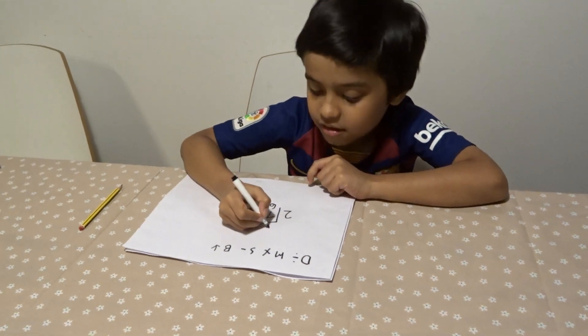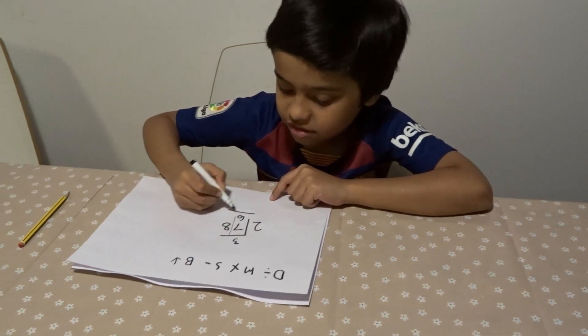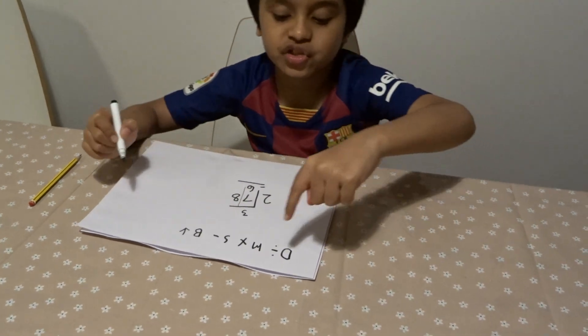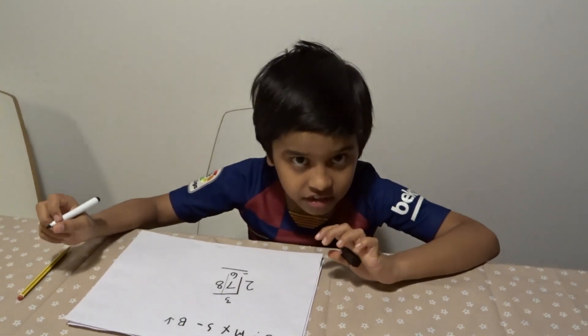And here we put a three. Now we minus it. It's time for subtraction. Seven minus six equals one.